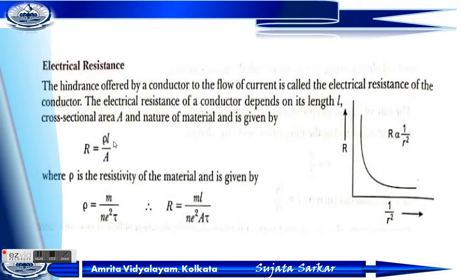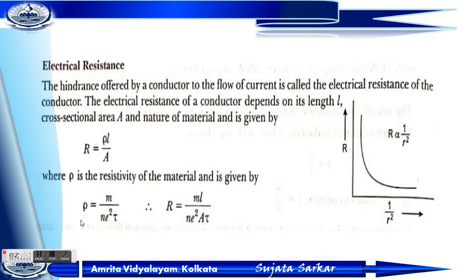So R is proportional to L divided by A. When we write the formula, R equals ρL divided by A, where ρ is the resistivity of the material of the conductor. Resistivity is denoted by ρ equals m divided by nq²τ, or we can write mL divided by nq²Aτ.